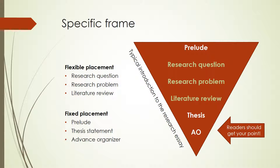Three elements have flexible placement: the local research question, the larger research problem, and the literature review, as one finds them in academic journal articles and essays. Three elements have relatively fixed placement: the prelude, thesis statement, and advanced organizer, which is simply a brief list of reasons a writer has for believing and recommending the thesis. The reasons become the basis for topic sentences in the core argument. This specific frame is the grammar of the research essay and is well worth memorizing. I require it in my writing classes, and I look for it whenever I read research essays, scholarly books, and academic articles. This framework is also a grammar of motives — it focuses and motivates readers and writers.